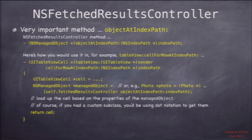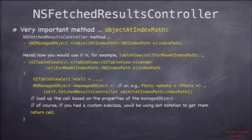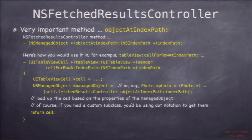There are really two parts to the FetchedResultsController. One is it answers all the questions in the UITableViewDataSource protocol — how many sections, how many rows in sections. It can also tell you at any given time what entity in your database is being shown in a given row. The key method is `objectAtIndexPath:` — you send that to the FetchedResultsController and it returns the managed object at that row, which you can then pull attributes from to populate your UITableViewCell.